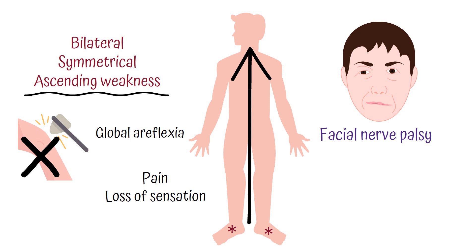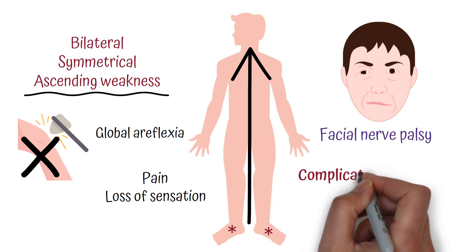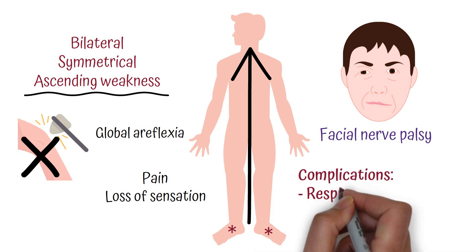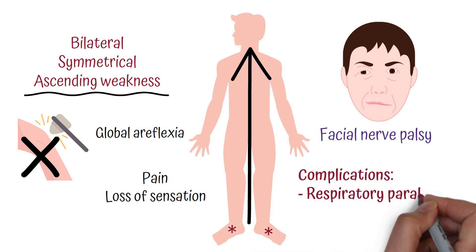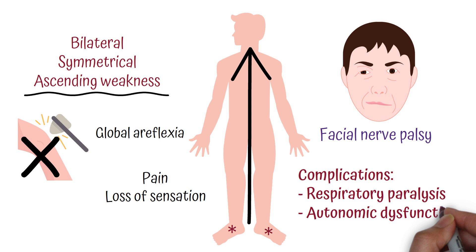The main complications of Guillain-Barré syndrome are respiratory paralysis and autonomic dysfunction.